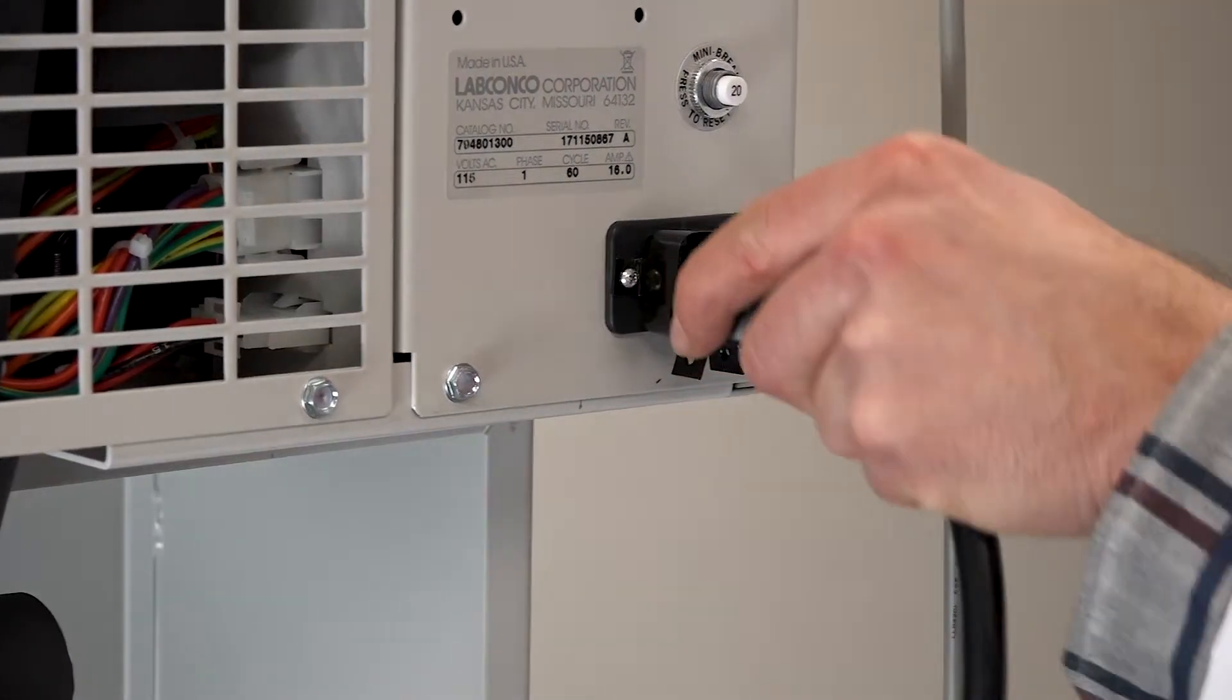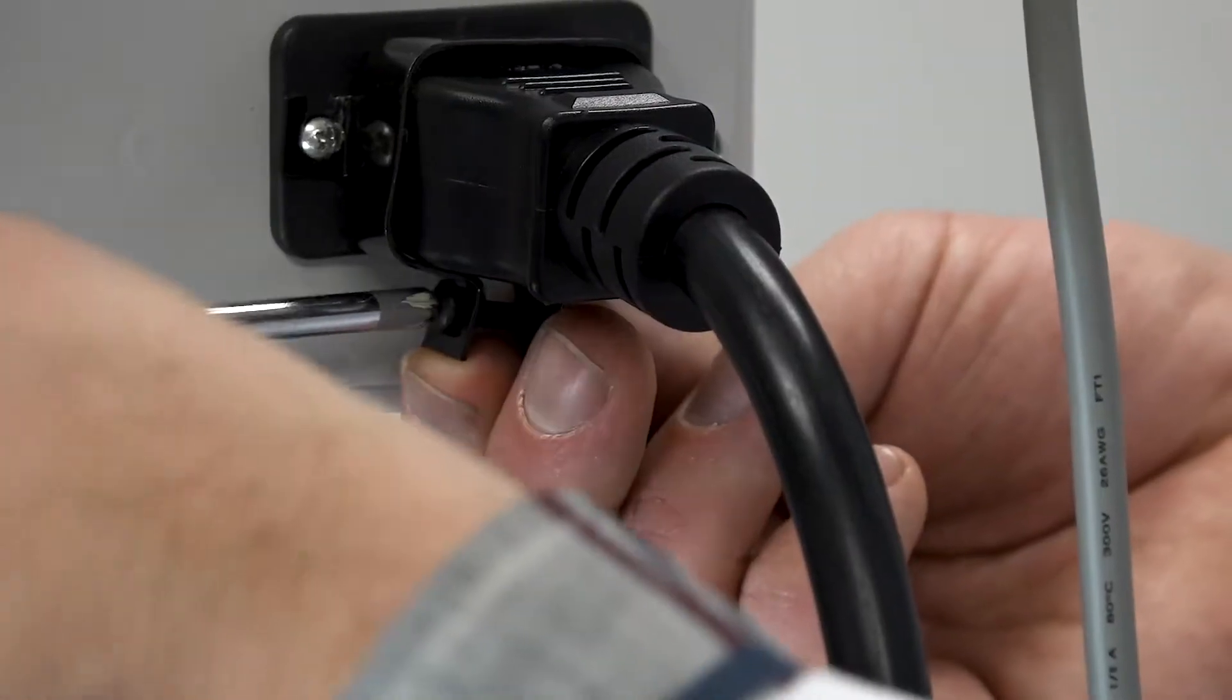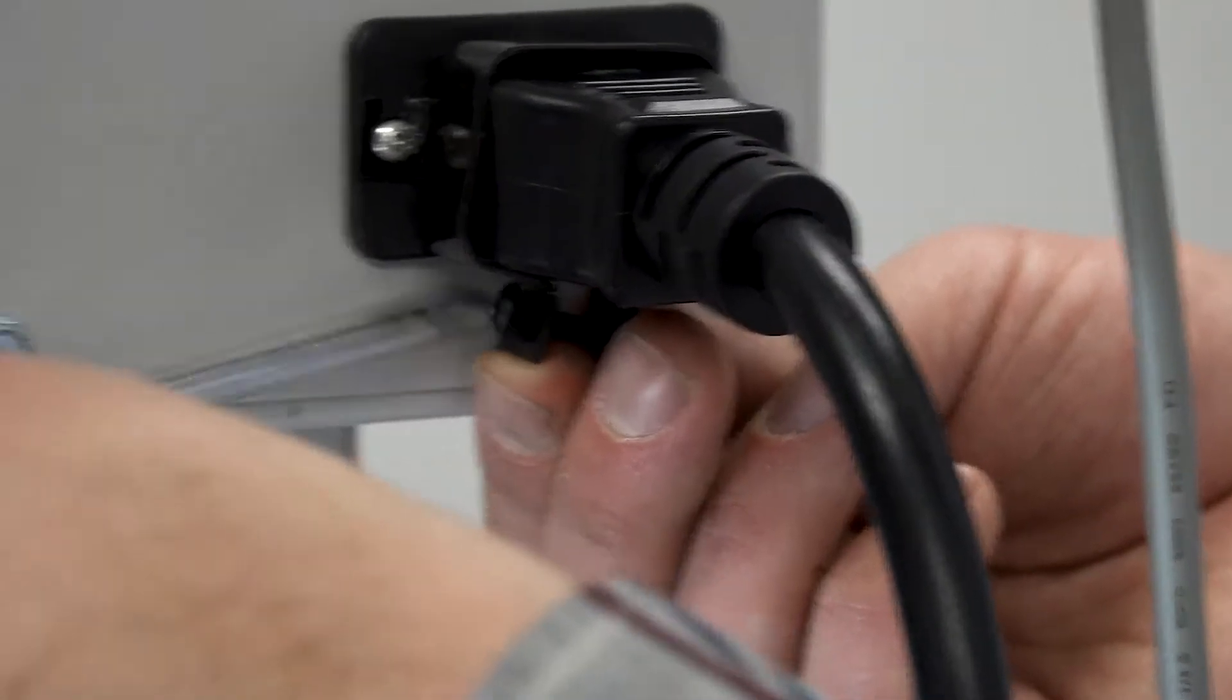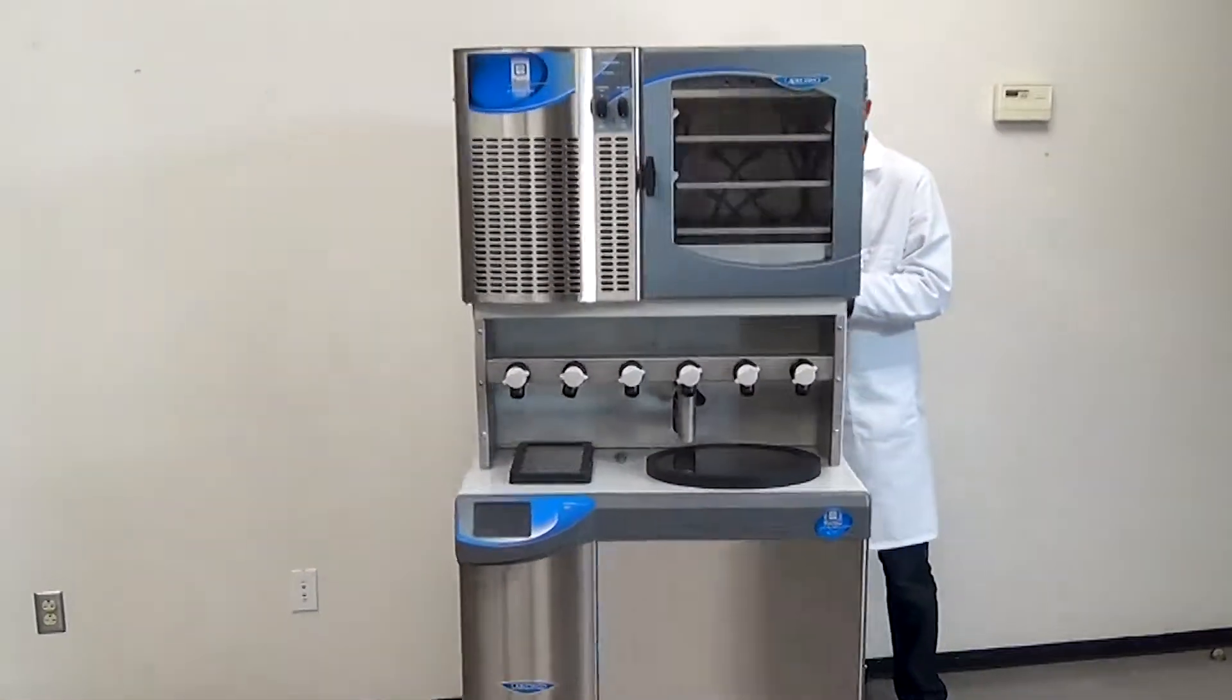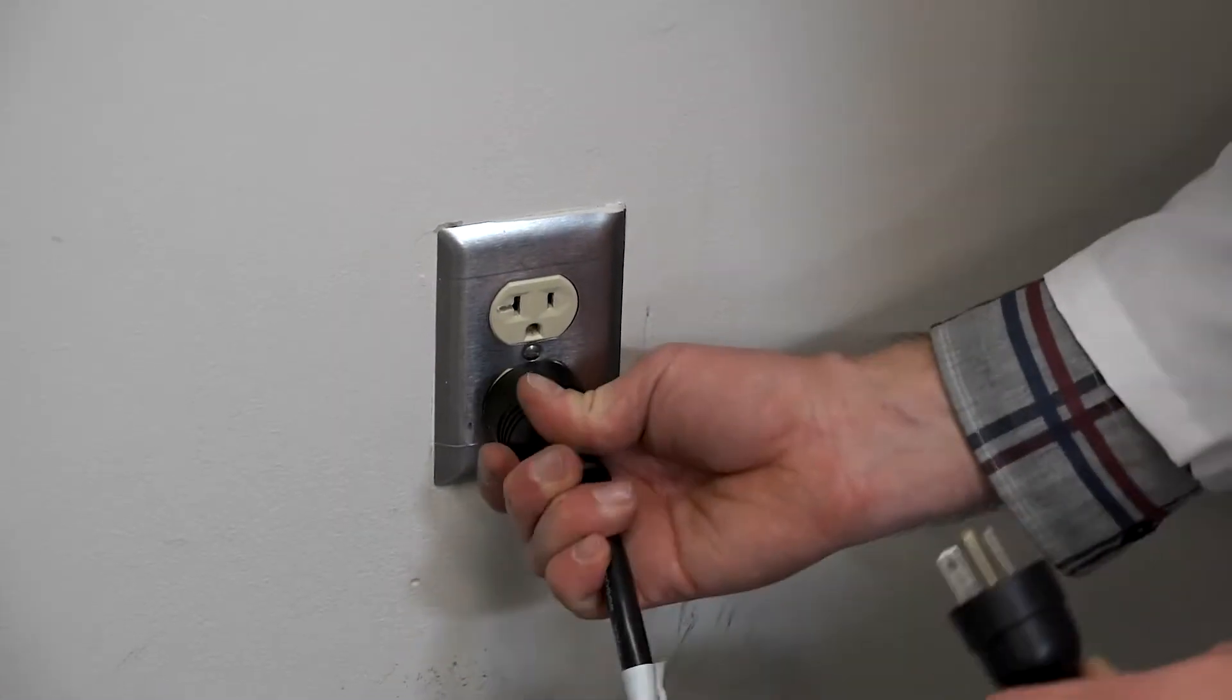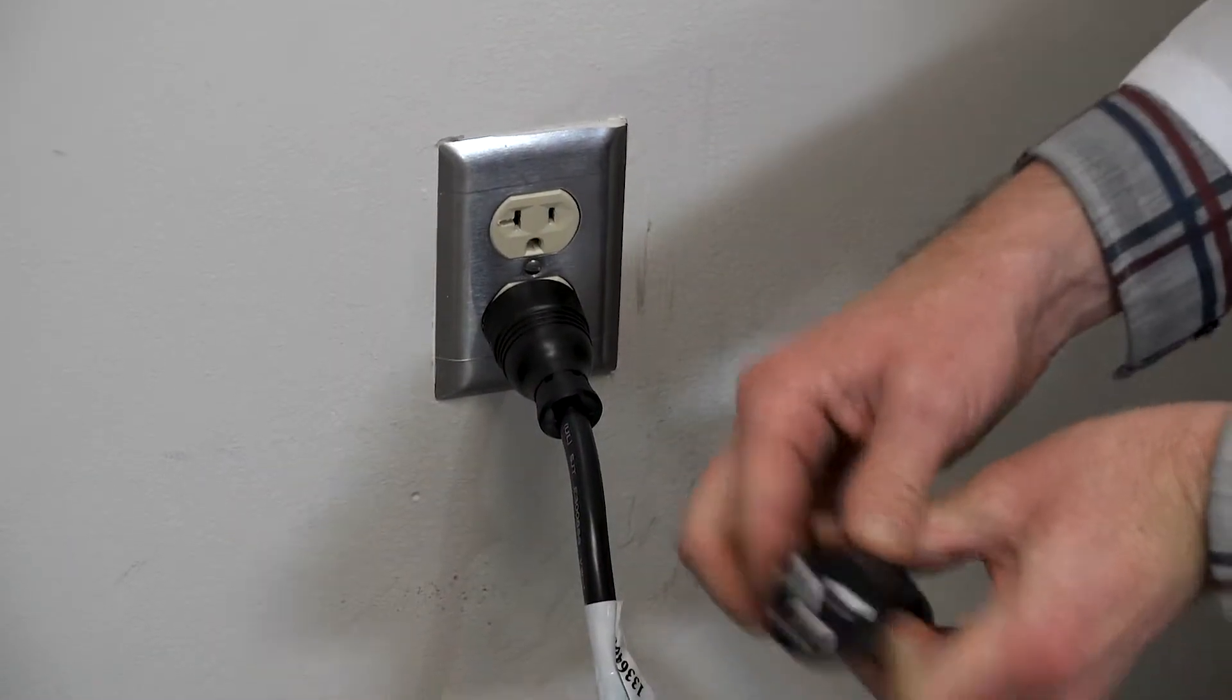Plug the power cord into the receptacle on the back of the stopper and tray dryer and plug the other end into a suitable power receptacle. Do not attempt to plug the stopper and tray dryer into the FreeZone freeze dryer.